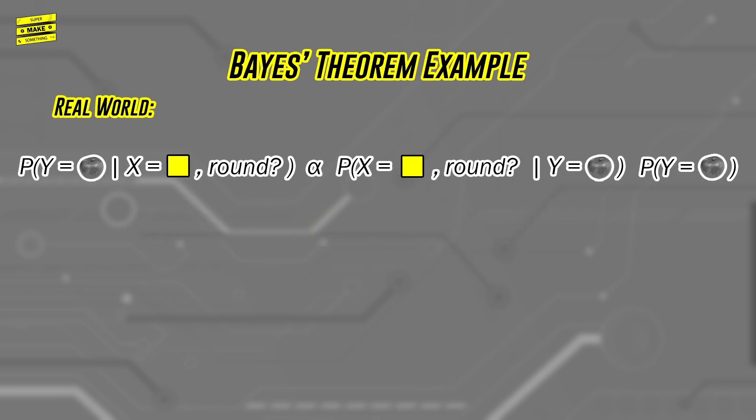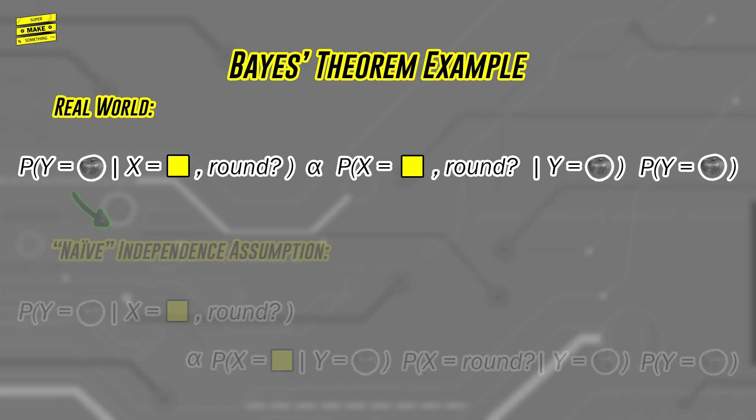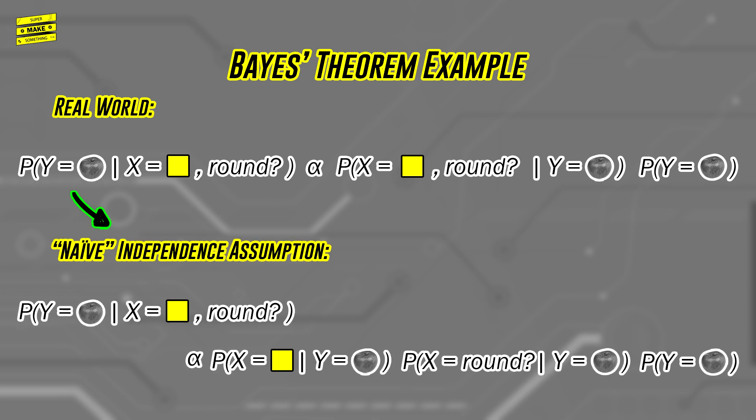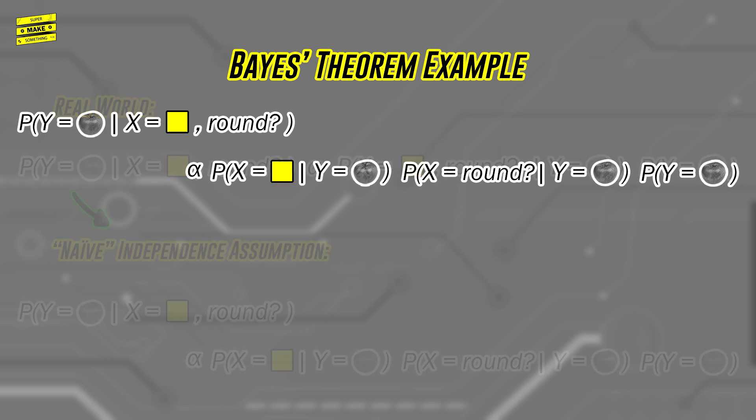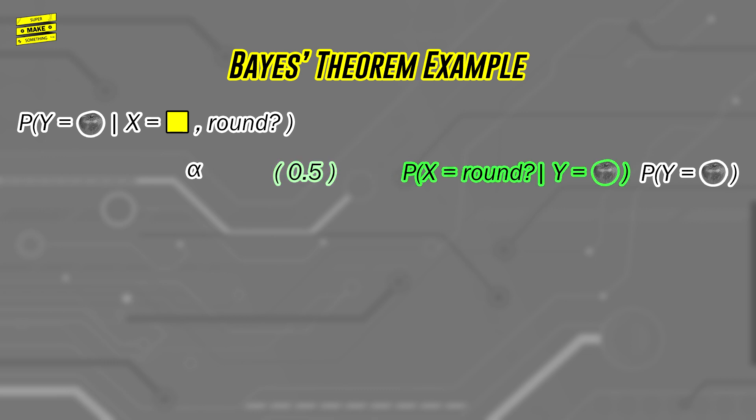In the real world, the probability that a fruit is yellow and round is correlated, but this is where the naive part of a naive Bayes classifier comes into play. If we assume that the probability of a fruit being yellow and round is independent, we can calculate the probability that the fruit is an apple given that it's yellow and round, as the probability that a fruit is yellow given that it's an apple, a 50% chance, times the probability that a fruit is round given that it's an apple, a 100% chance, times the probability of randomly encountered an apple, a 33% chance. Multiplying these numbers together gives 0.17.